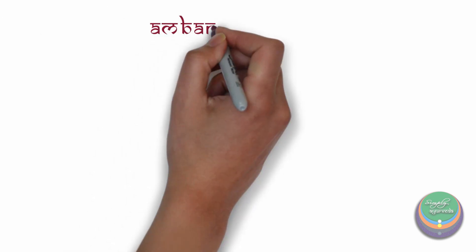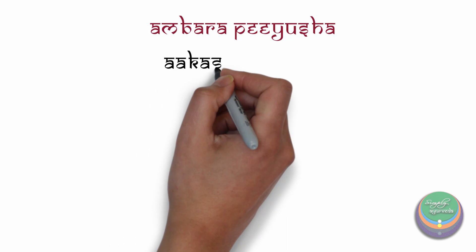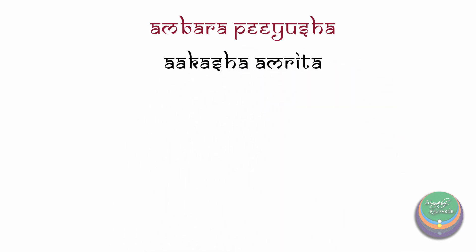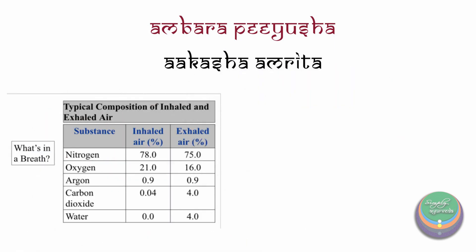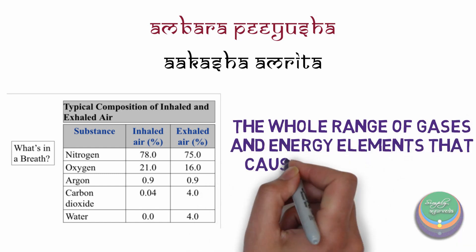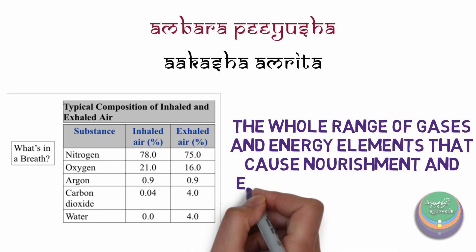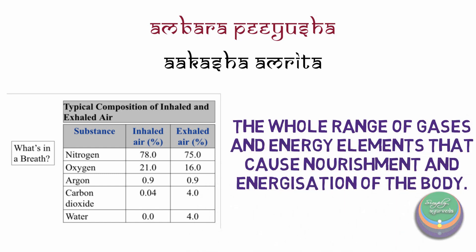Ambarapiyusha, which can be understood as Akasha Amrita, represents not just oxygen, but the entire mixture of gases and energy elements that cause physical nourishment and energization. To add on, let us look into a few more references.